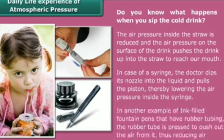When you sip a cold drink through a straw, the air pressure inside the straw is reduced, and the air pressure on the surface of the drink pushes the drink up into the straw to reach your mouth. This is a daily life example of atmospheric pressure.